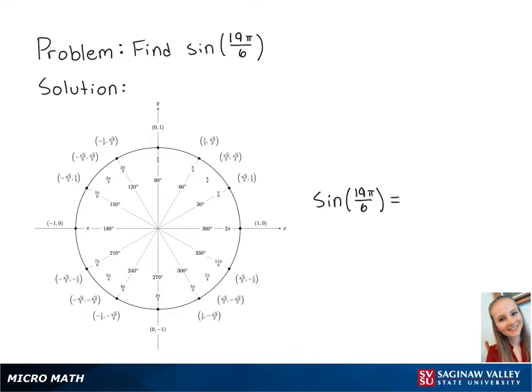For this problem, we're going to find sine of 19 pi over 6. Looking at the unit circle, we can see that if we travel around the circle one full time, we will be at 12 pi over 6.